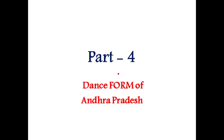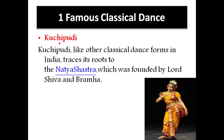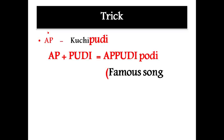Part 4: Dance form of Andhra Pradesh. The famous dance of Andhra Pradesh is Kuchipudi. Like other classical dance forms, it traces its roots to the Natya Shastra, founded by Lord Shiva and Brahma. The trick: AP (Andhra Pradesh) + Pudi = 'Apudi Pude', a famous Tamil song. AP = Andhra Pradesh, Pude = Kuchipudi.